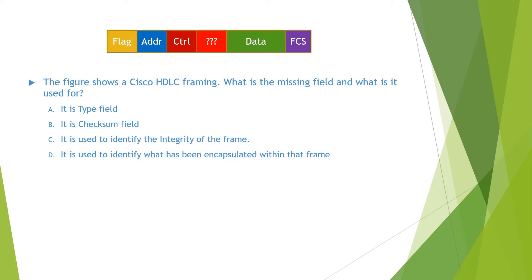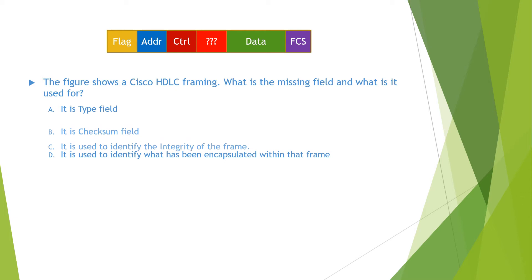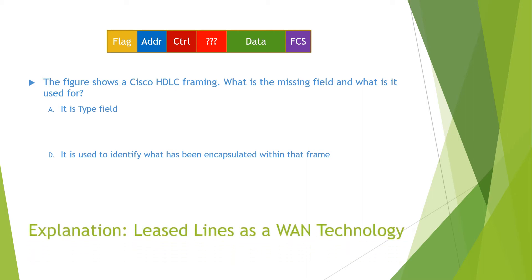Option D: it is used to identify what has been encapsulated within that frame. As we know, the Cisco HDLC frame has an additional field which is the type field, and it is used to identify what has been encapsulated within that frame. So the answers for this question are A and D. You can find the detailed explanation in the video Leased Lines as a WAN Technology.